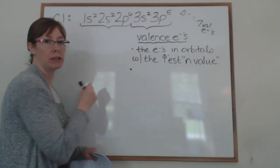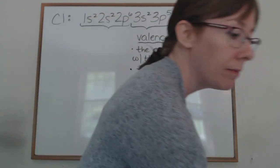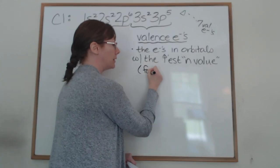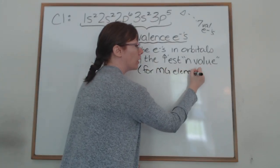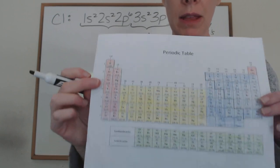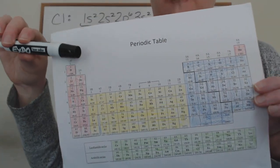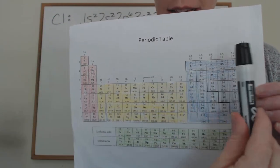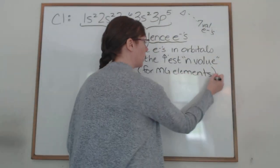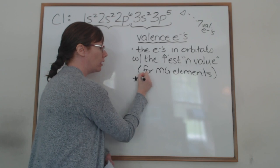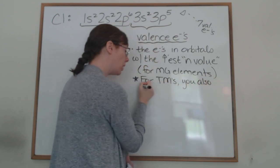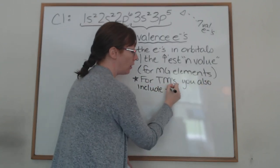That rule — valence electrons have the highest n value — is true for main group elements. Chlorine is a main group element. Main group elements are the first two columns and the last six columns. However, for transition elements, you also include the outer d's.